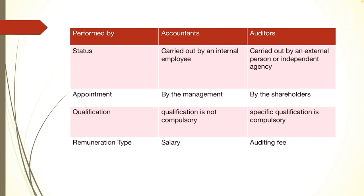Next is status. Accounting is usually carried out by an internal employee of the company — a person who works for the company — whereas auditing is carried out by an external person or independent agency. Next is appointment. An accountant will be appointed by the management of the company, whereas an auditor will be appointed by the shareholders of the company or a regulator.